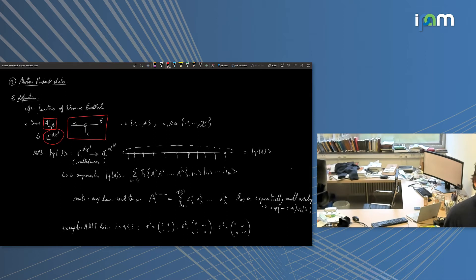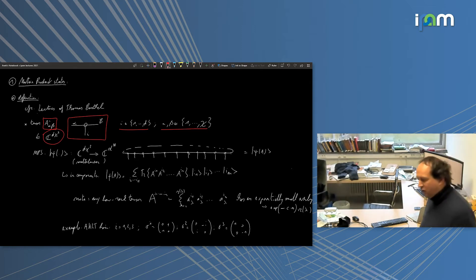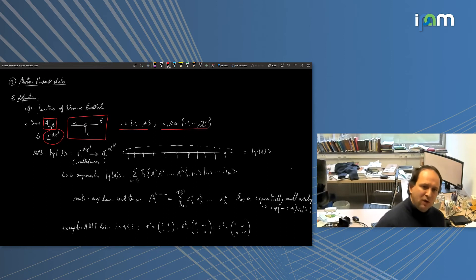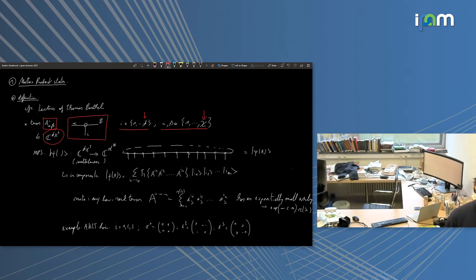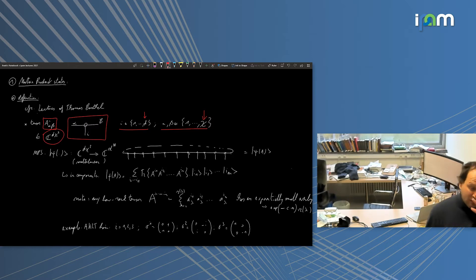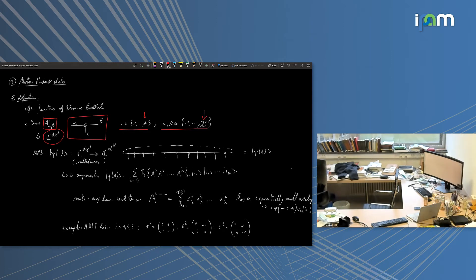The index i runs from 1 to d, and the indices α and β run from 1 to χ. In the applications we have in mind, d is typically small — it's the dimension of the local Hilbert space — while χ can be very large, up to 10,000 even. Everything I say about these mathematical aspects is completely independent of what is small-d or what is χ.